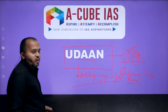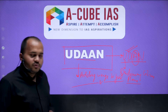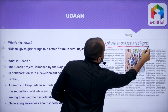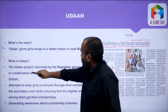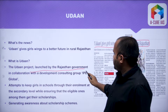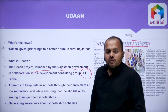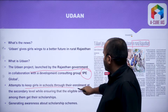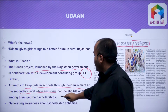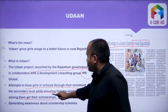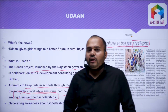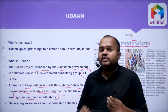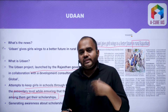Udaan gives wings to a better future in rural Rajasthan. The Udaan project was launched by the Rajasthan government in collaboration with a developmental consulting group, IPE Global. The objective of the Udaan scheme is to keep girls in school through their enrollment at the secondary level while ensuring that eligible ones among them get their scholarship. In short, the major objective is to promote the retention rate of girl students at the secondary level and to provide them subsequent scholarship.